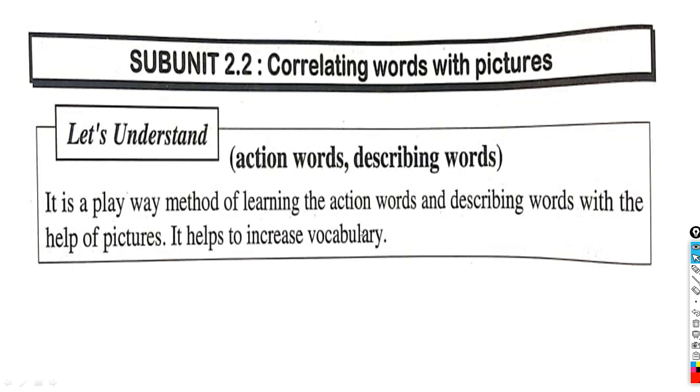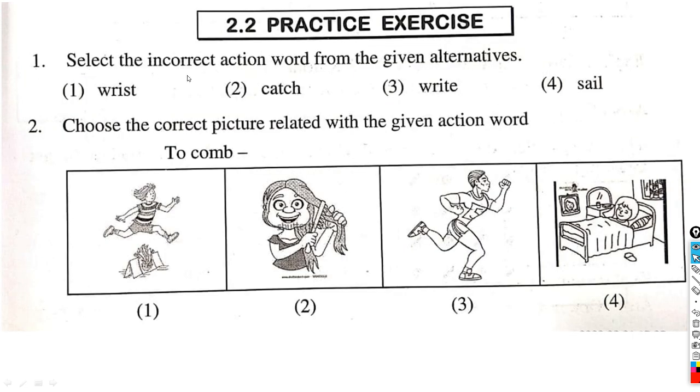Action words and describing words will help increase your vocabulary. Question number 1: Select the incorrect action word from the given alternatives. We have to choose the incorrect action. Catch is an action, write is an action, and sail is also an action. Sail means boat or ship travels from one place to another place.